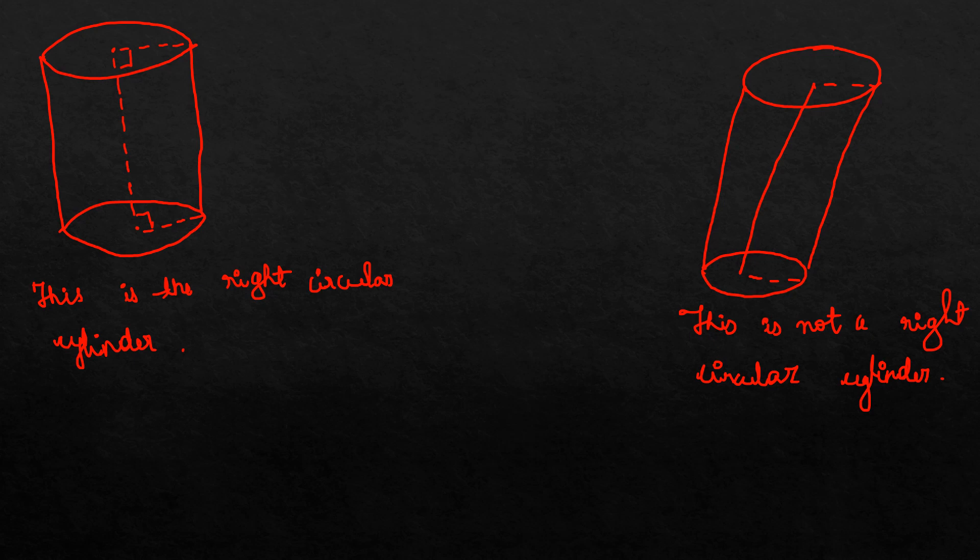Observe that the line segment joining the center of circular faces is perpendicular to the base. You can see there, in a circular shape, we can find the perpendicular. Circular faces perpendicular to the base. Such cylinders are known as right circular cylinders. We are only going to study this type of cylinder through this chapter. This type we may study in higher class.